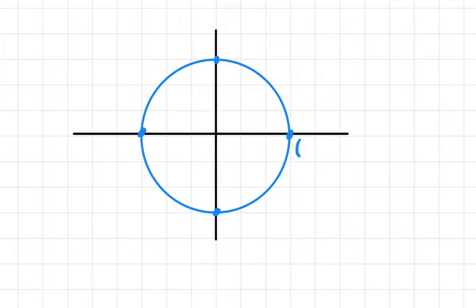And that means that we have these key points here: (1, 0) on the axes right here, (0, 1), (-1, 0), and (0, -1). Those are our first key points.